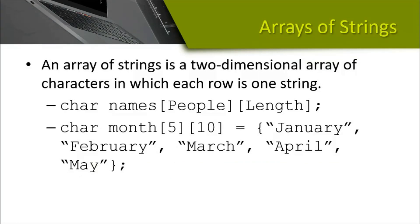If we consider an array of strings, since a string itself is a single-dimensional array of characters, an array of strings will be a two-dimensional array of characters. In this 2D array, each row represents one string, so there will be multiple strings in that particular array.